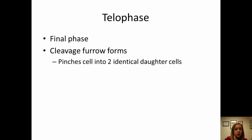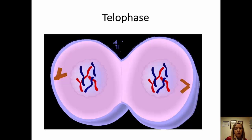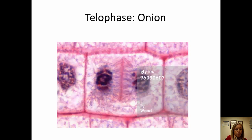Finally, telophase — you start to see a cleavage furrow right down the middle that helps divide one cell into two daughter cells that are identical. You can actually make out that cleavage furrow in the onion slide, and that cell has become two daughter cells.